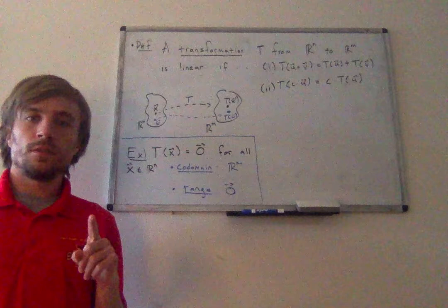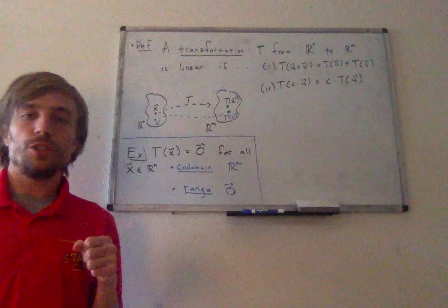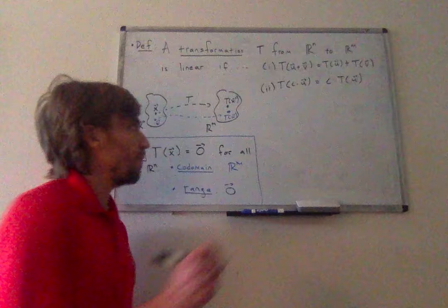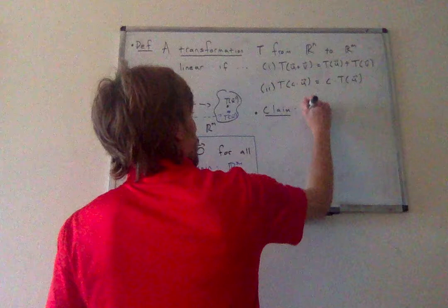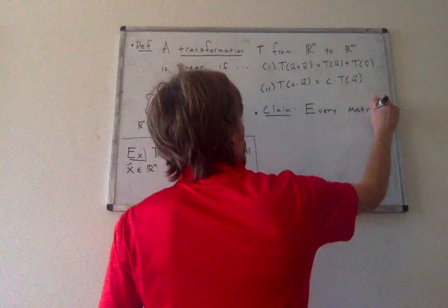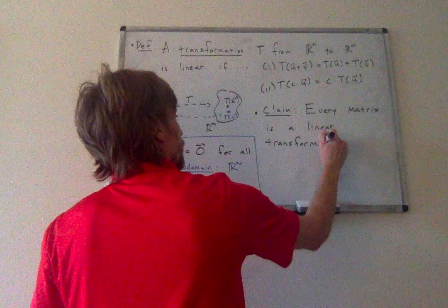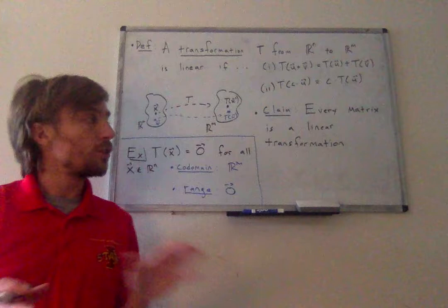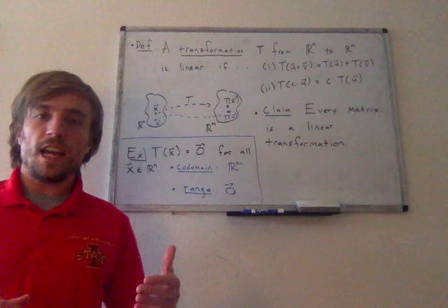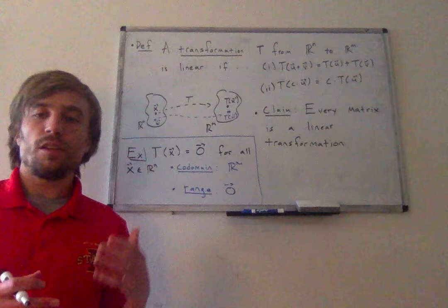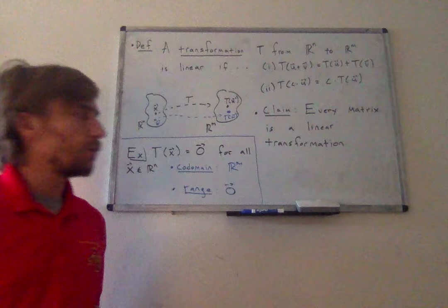There's an even more important type of object which represents a linear transformation — and this is the not-so-secret punchline of this lecture. Every matrix is a linear transformation. I want to spend the second half of this discussing why, getting an intuition for how we can think about a matrix as a linear transformation, and doing some examples.